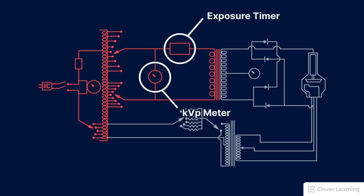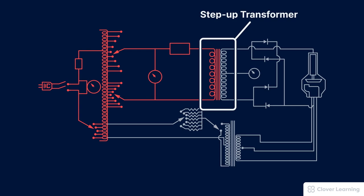The last component of the primary circuit is what we call the step-up transformer or technically the primary side of the step-up transformer. Up until this component, the electricity is still in volts, but we need the electricity to be in kilovolts. The step-up transformer increases or steps up the voltage from volts to kilovolts.